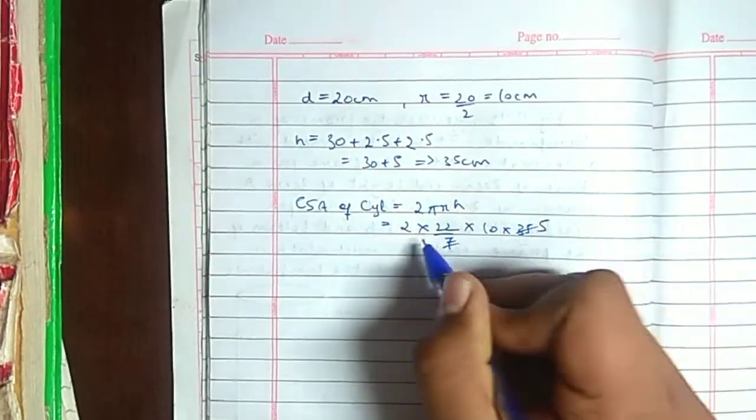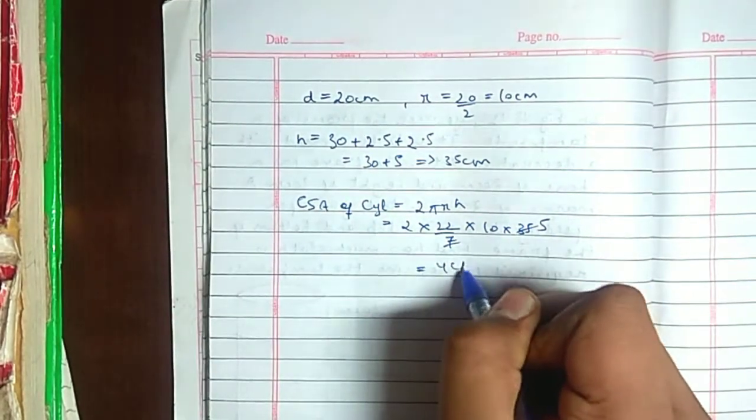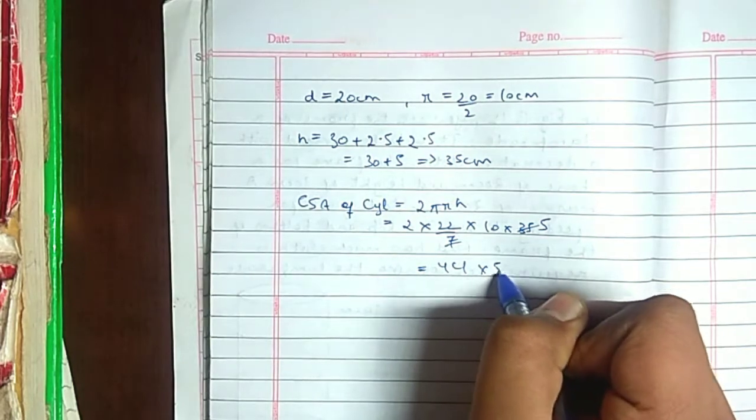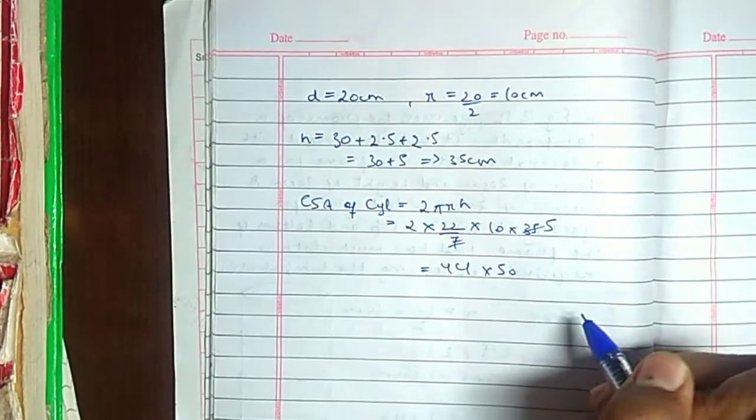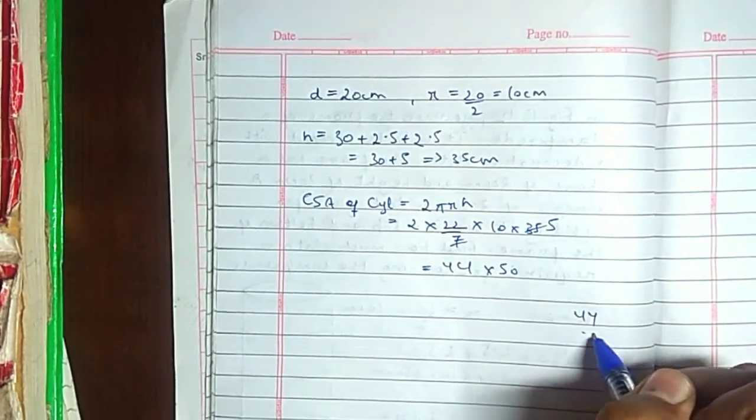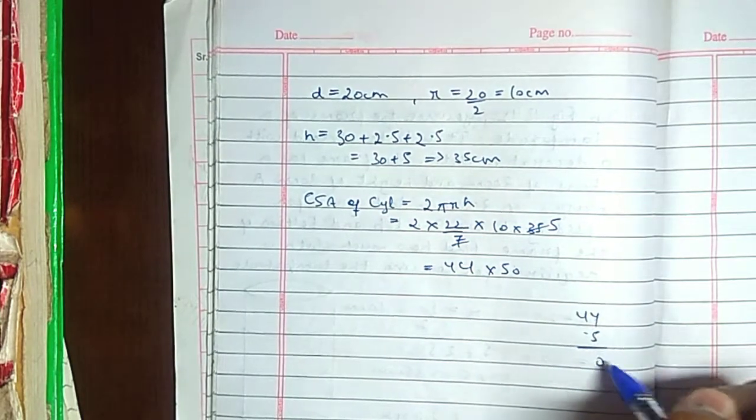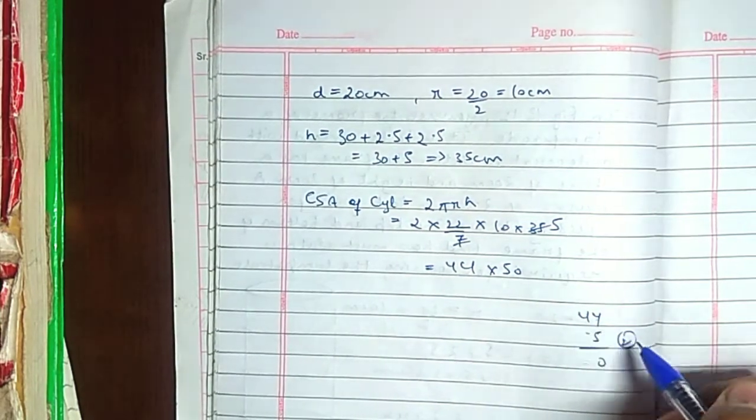7 and 35, that is 5. 22 and 2 is 44. 5 and 10 is 50. 4 times 5 is 20, 0 with 2 carry. 4 times 5 is 20 and 22.